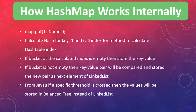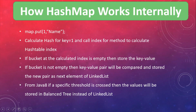Whenever we call map.put and provide a key and value, first the hash for the key will be calculated. Whatever hash value is returned, the indexFor method is called to calculate the hash table index. Once the index value is calculated, it will be checked if that specific index is empty — that is, there is no data already stored in the hash table for that index.